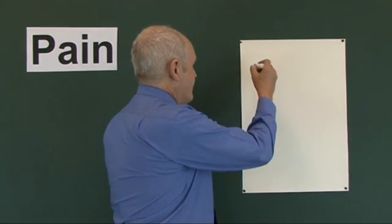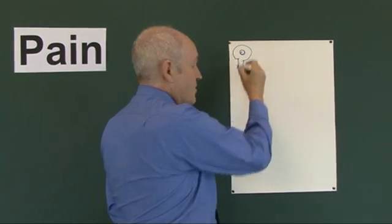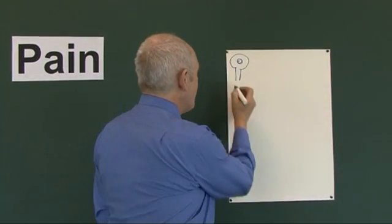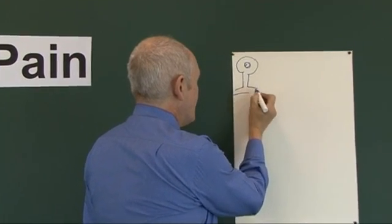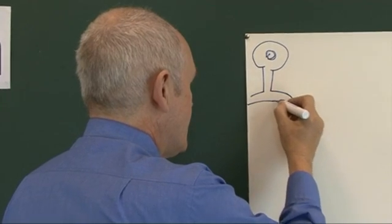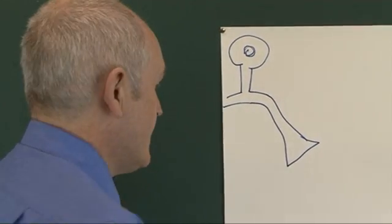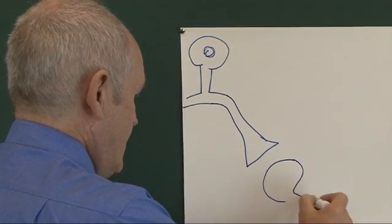Well, as we know, we have afferent fibers. Here's the old cell body that we know so well, of the sensory neuron. It goes into the spinal cord and it will synapse with a secondary neuron.